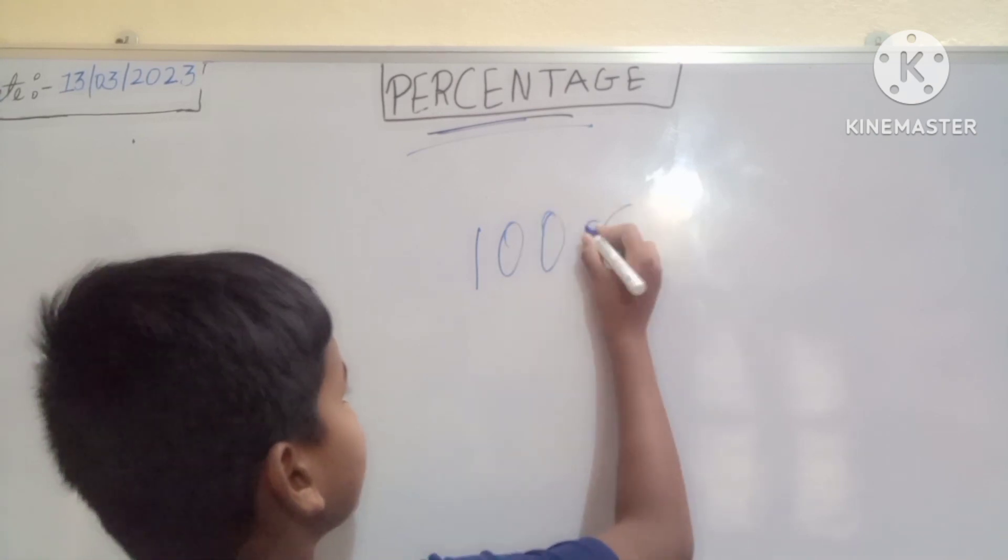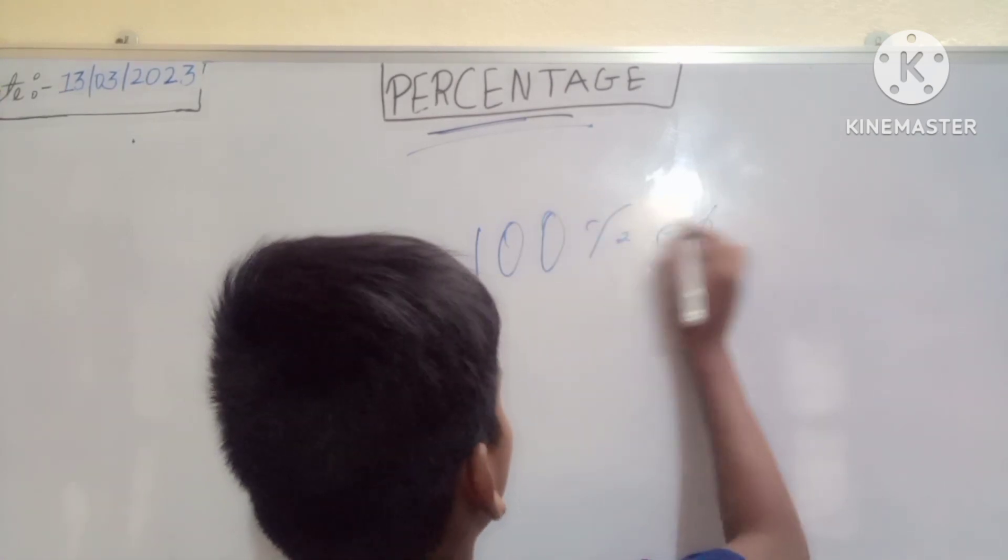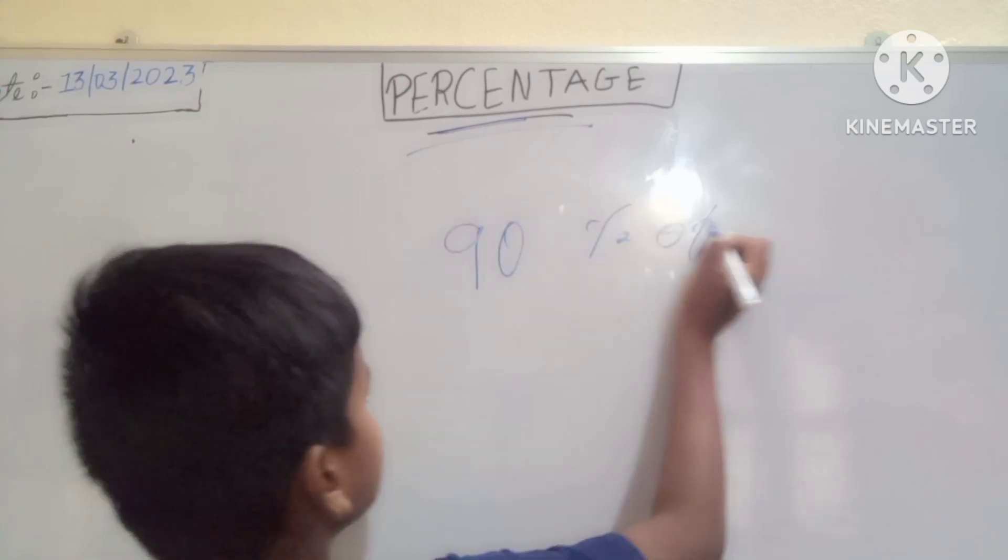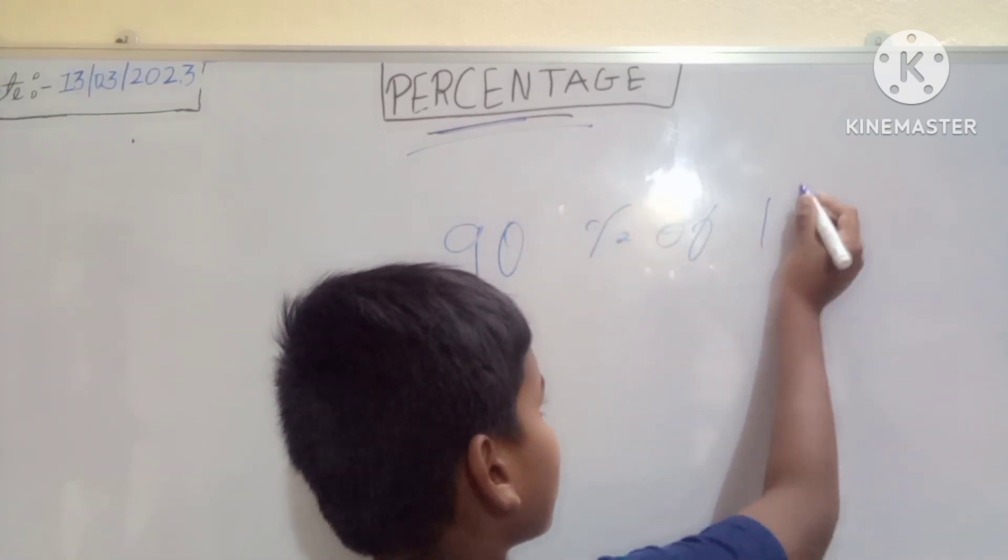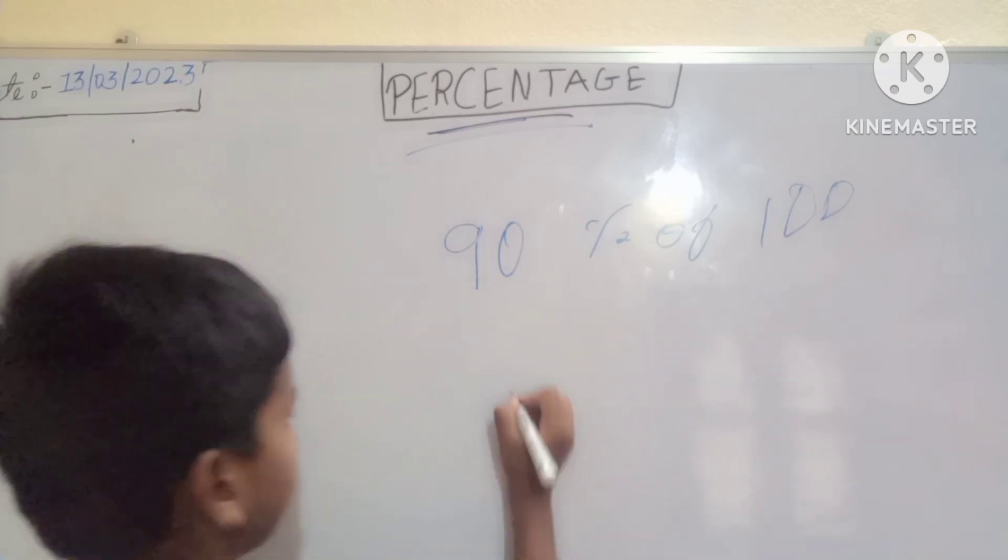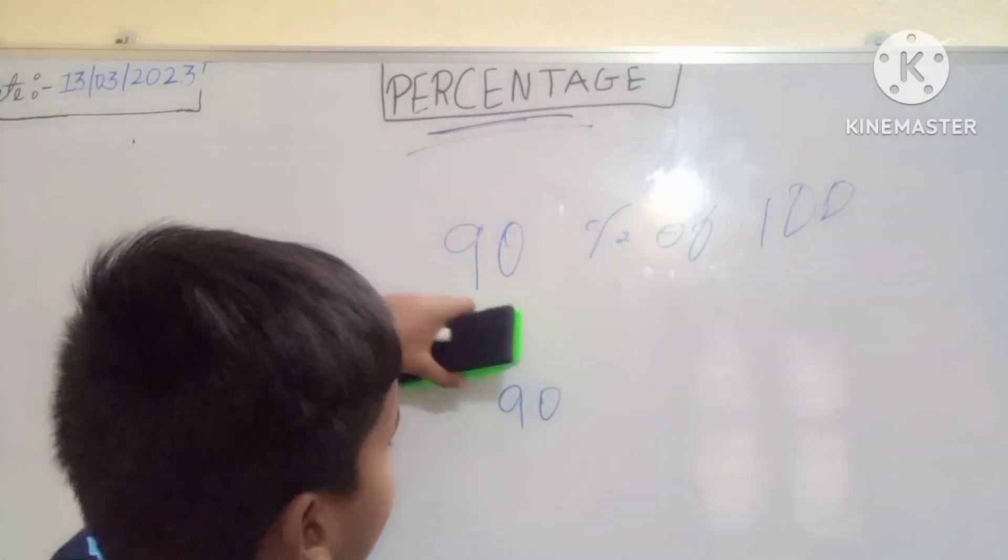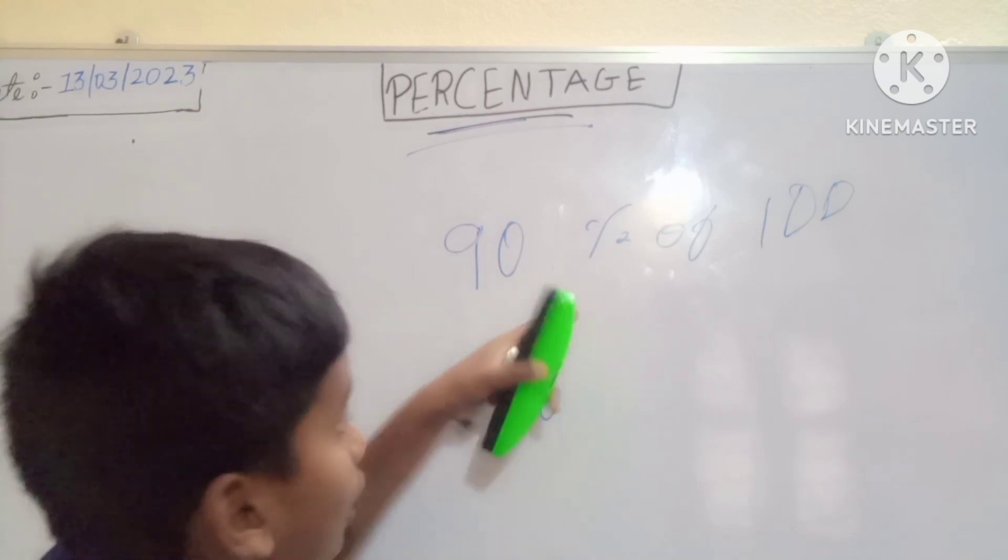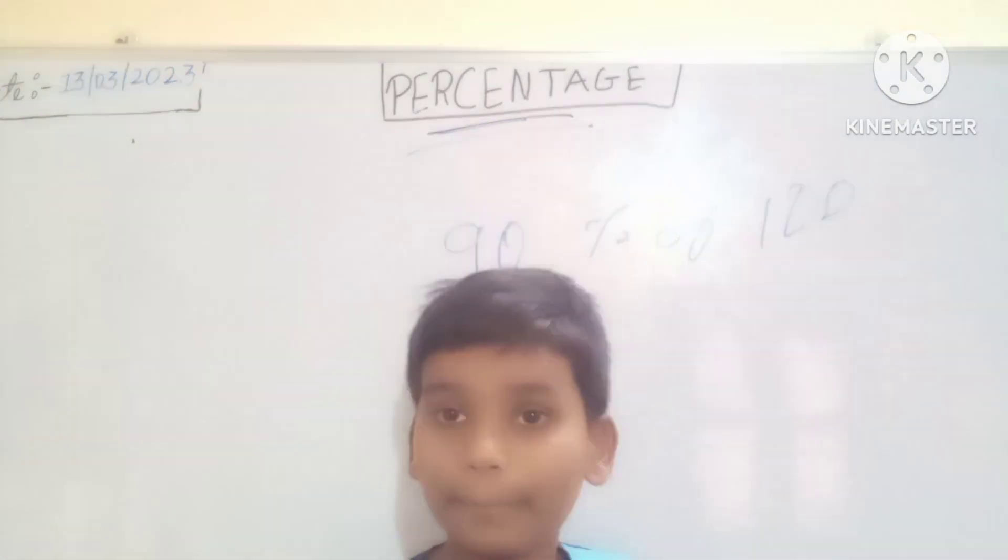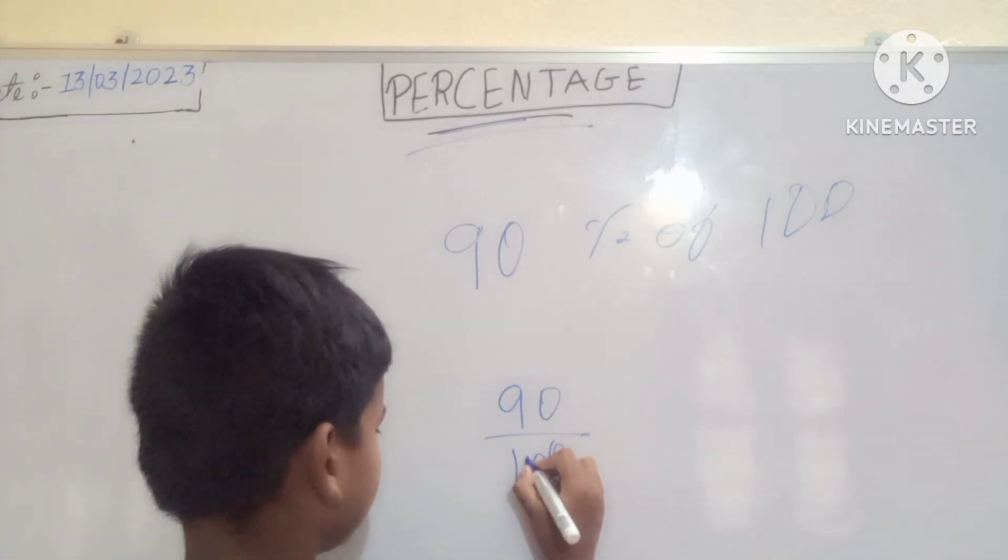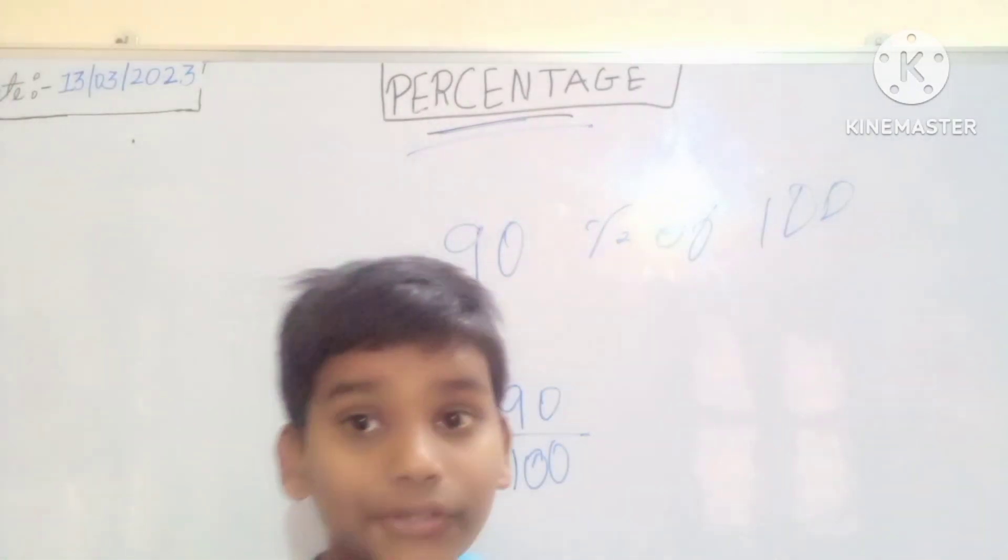See, what is 90 percent of 100? Keep the number 90 as it is. Now what is percent? Percent means nothing but 100. So here, 90 by 100. Now what is 'of'? 'Of' means multiplication sign, or you can say multiplication.